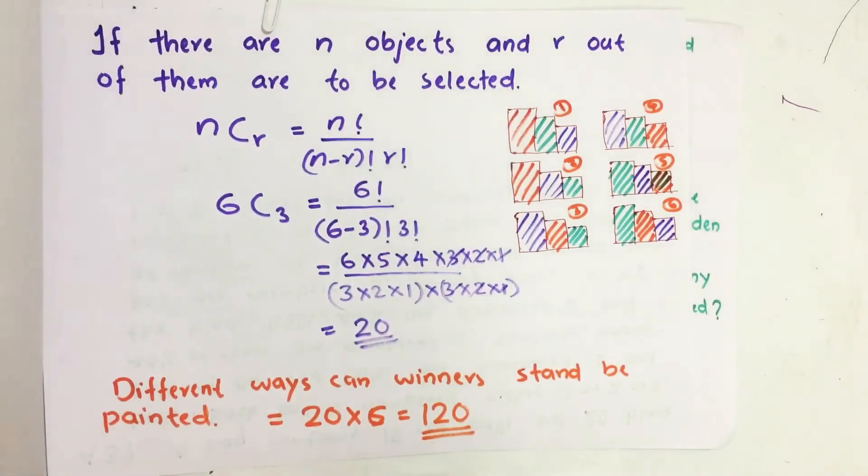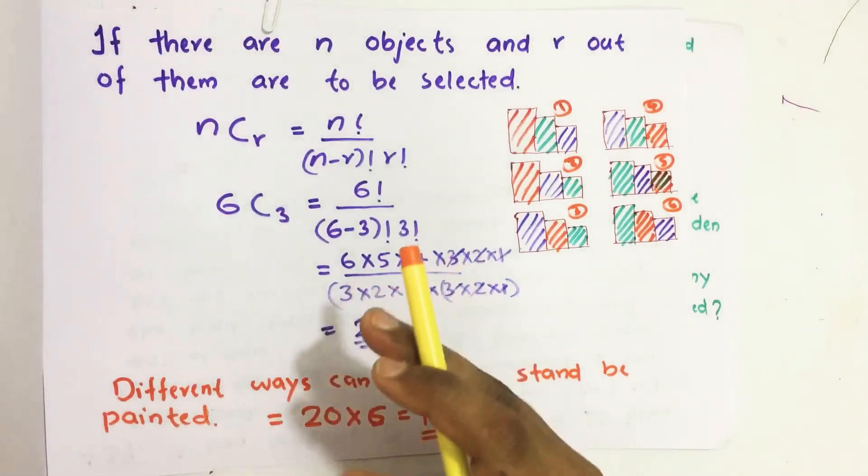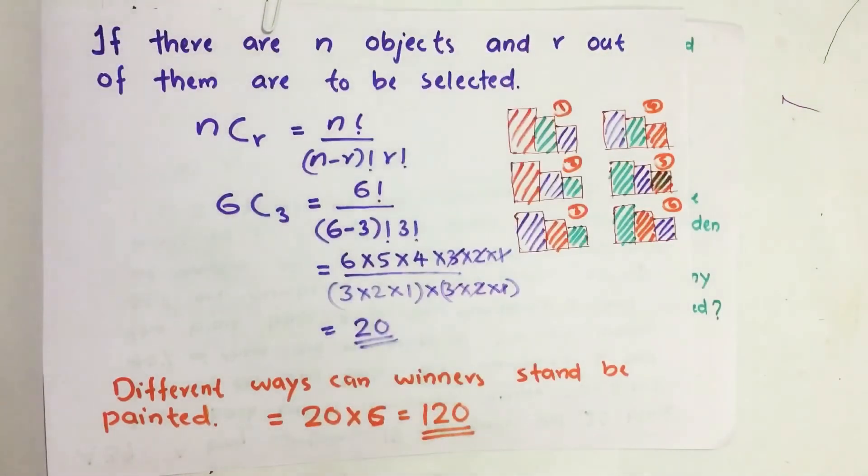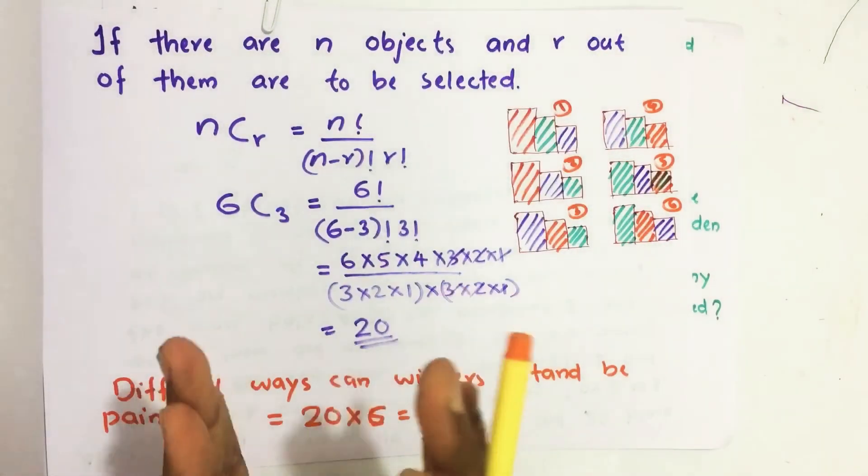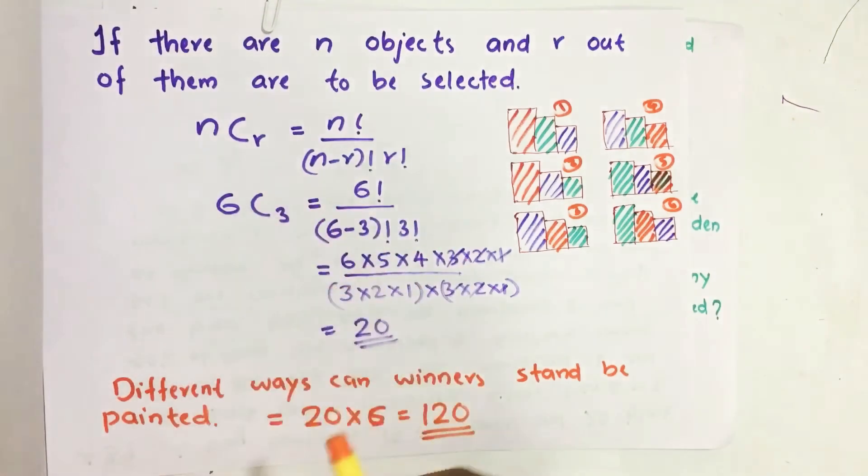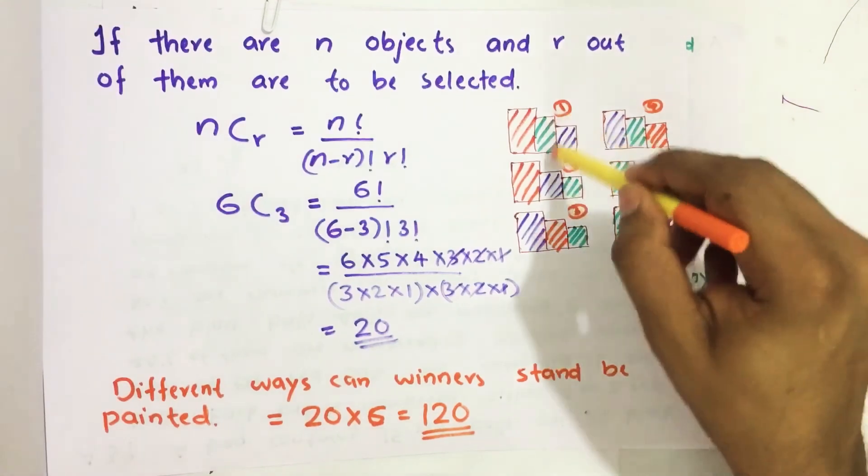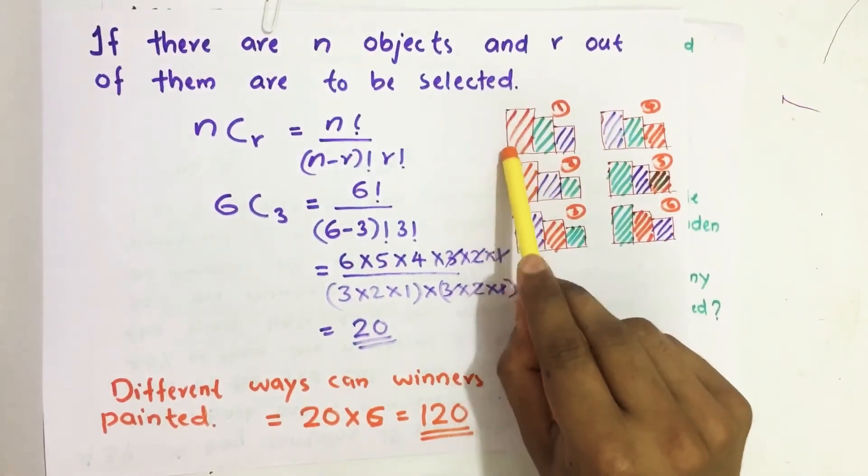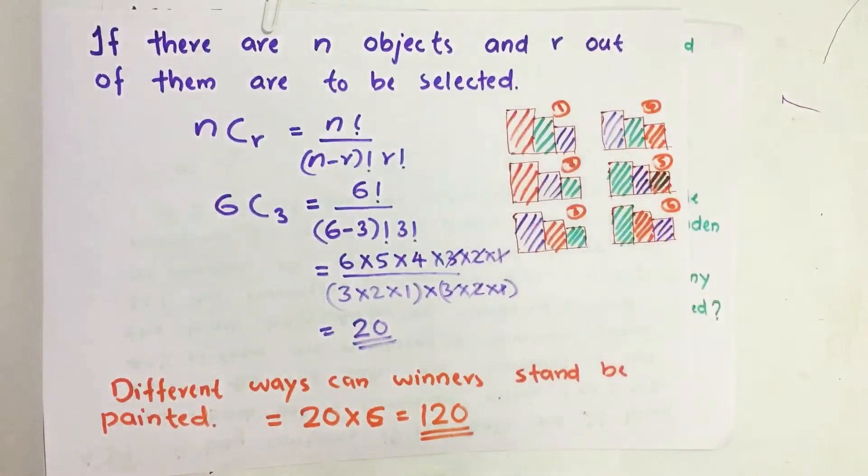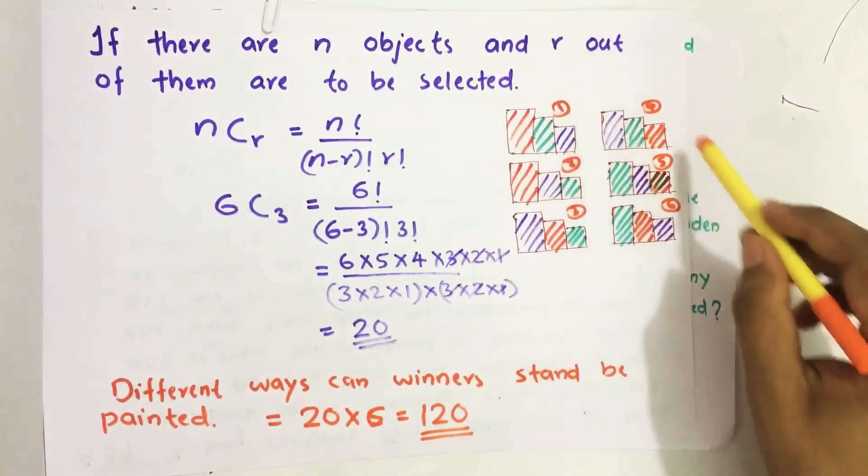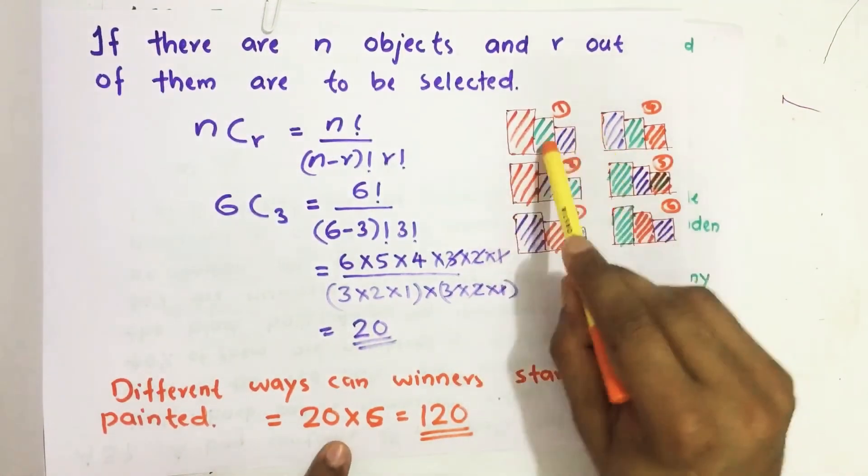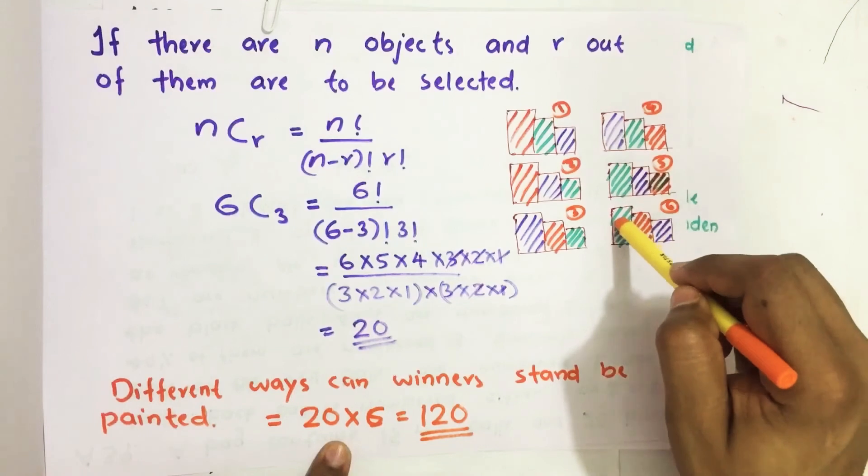So 20 different ways we can choose three colors from these six colors. So if I choose three colors then those three colors I can arrange in six different forms. So here I took one example red, green and violet. So these three colors I can arrange in six different ways.